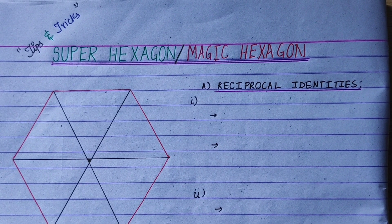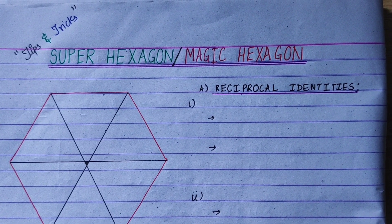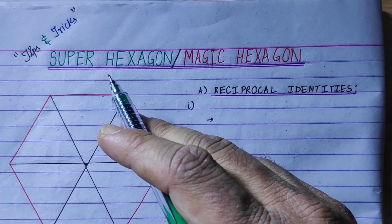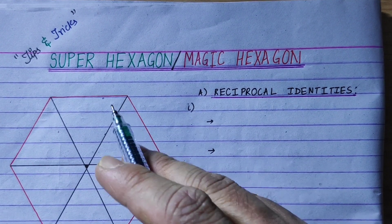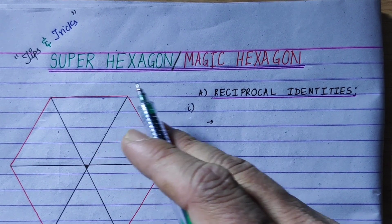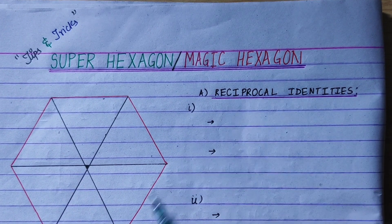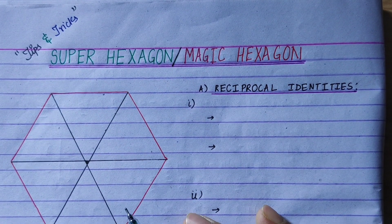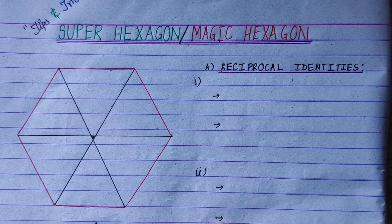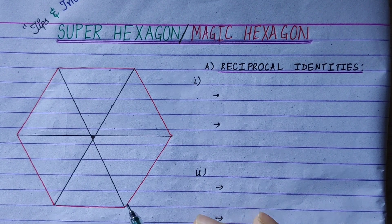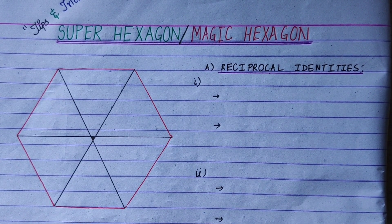Hi everyone, welcome to my option math tips and tricks video. We will make a superhexagon, or magic hexagon. We will use the hexagon method of trigonometry — more than 30 formulas easily.